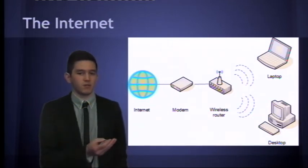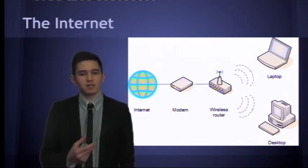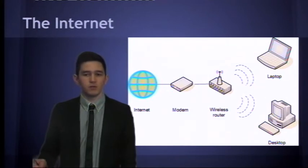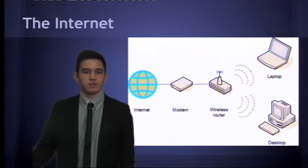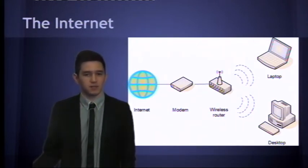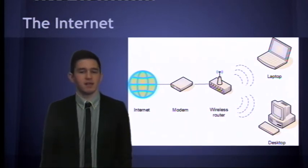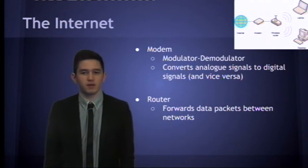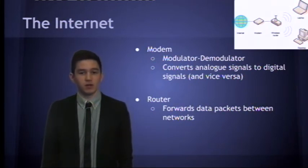When the web server returns the website back in packets, the packets will go to the modem, to the wireless router, and then the router will send it to the laptop. The same applies for the desktop computer — if the desktop computer requests some information, the router will route the data to its destination. So the router will forward packets between the different networks.